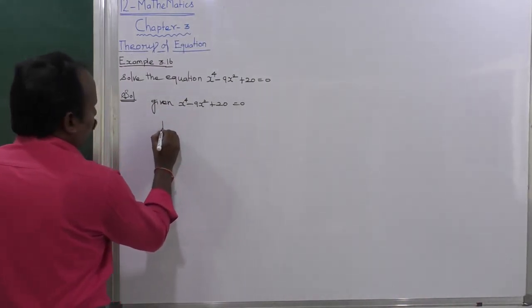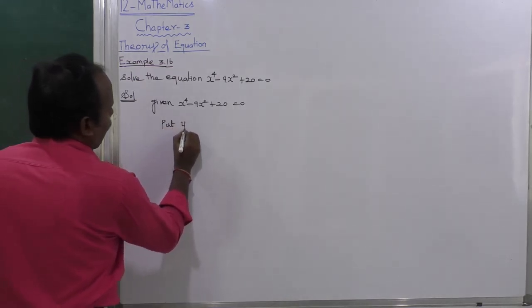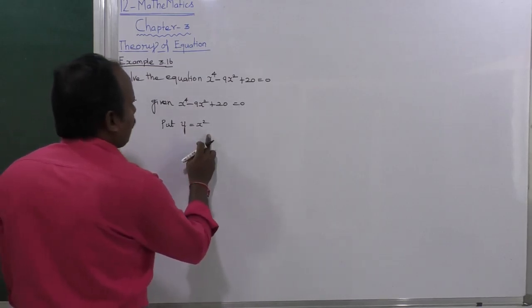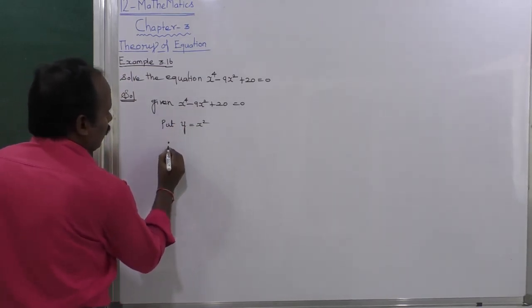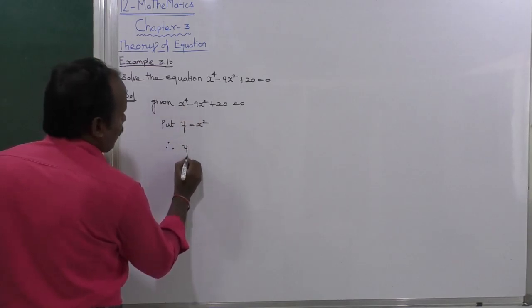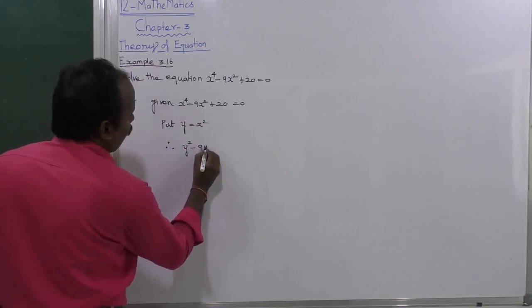Put y = x^2. Replacing the value of x^4, we get y^2 - 9y + 20 = 0.